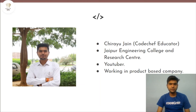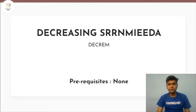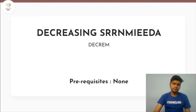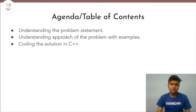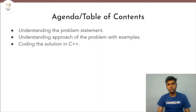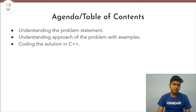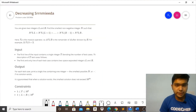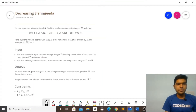The problem we are taking today is 'Decreasing Cinema Media' — the problem code is DECRAMP. The prerequisites of the problem are done. For the agenda: first we'll understand the problem statement, then look at the approach with the help of multiple examples, and then code the solution in C++.